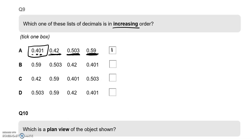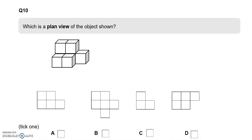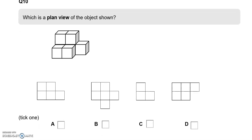Which is a plan view of the object shown? Plan means looking at it from the top. We've got, having a look at them, two at the top, and then another two, and then one here. So that is actually option D.